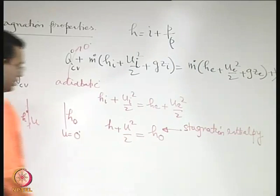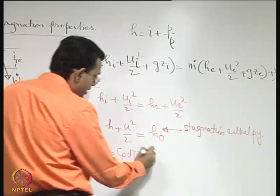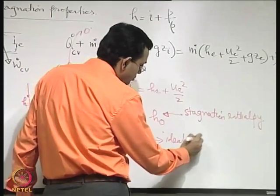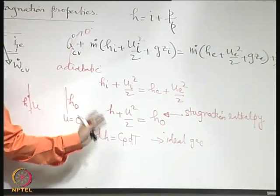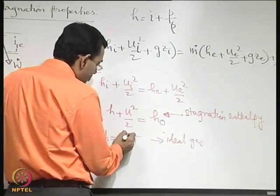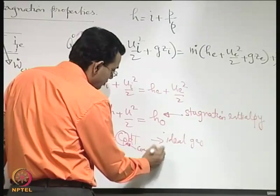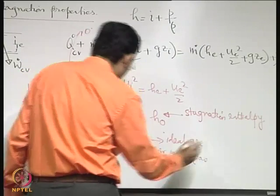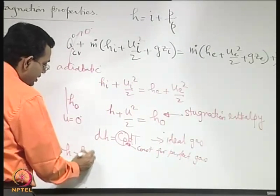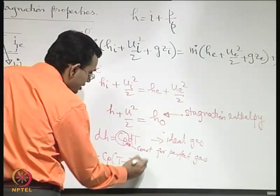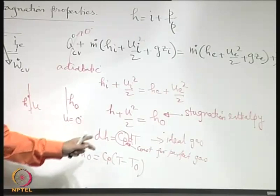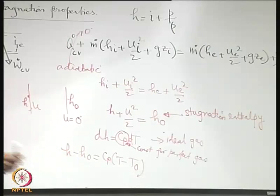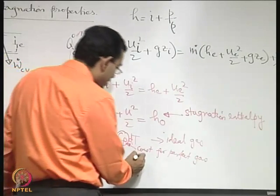For an ideal gas, dh = c_p dT, where c_p is a function of temperature in general, but for a perfect gas c_p is a constant. Therefore, h - h₀ = c_p(T - T₀) for a perfect gas, where T₀ is the temperature corresponding to the stagnation enthalpy — this is known as the stagnation temperature. Temperature is referenced because it is a directly measurable quantity from experiments.